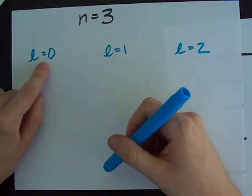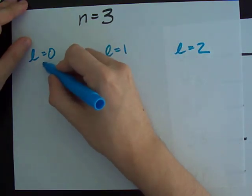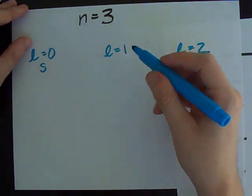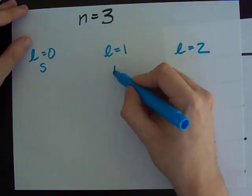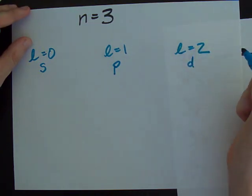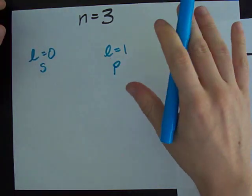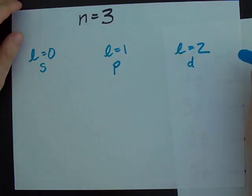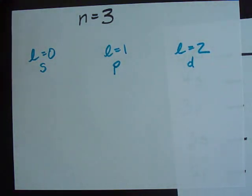Now, this L equals zero represents an S orbital. L equals one represents what we call a P orbital. And L equals two is a D orbital. L can't equal three. So, there's no 3F in any atom.